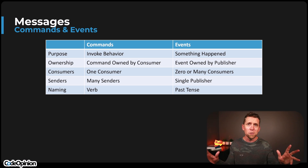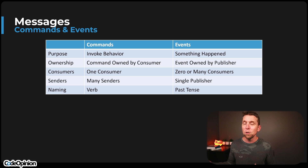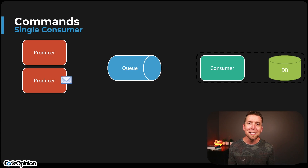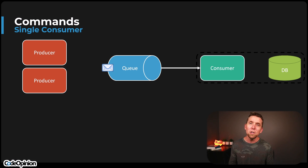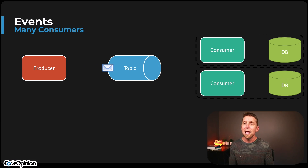Events are very different. You're trying to tell other parts of your system — many different parts — that something happened. That event is owned by the publisher. You want to tell other parts of your system, 'hey, this happened.' There could be zero consumers or many different consumers, but there's still only one publisher publishing that event. Events are generally named in the past tense, and multiple producers can send commands to a queue with a single consumer processing each one.